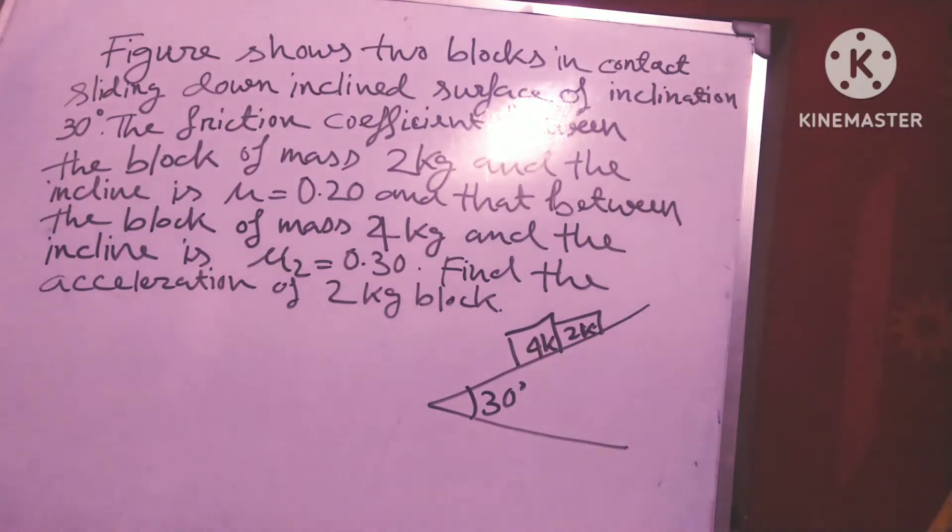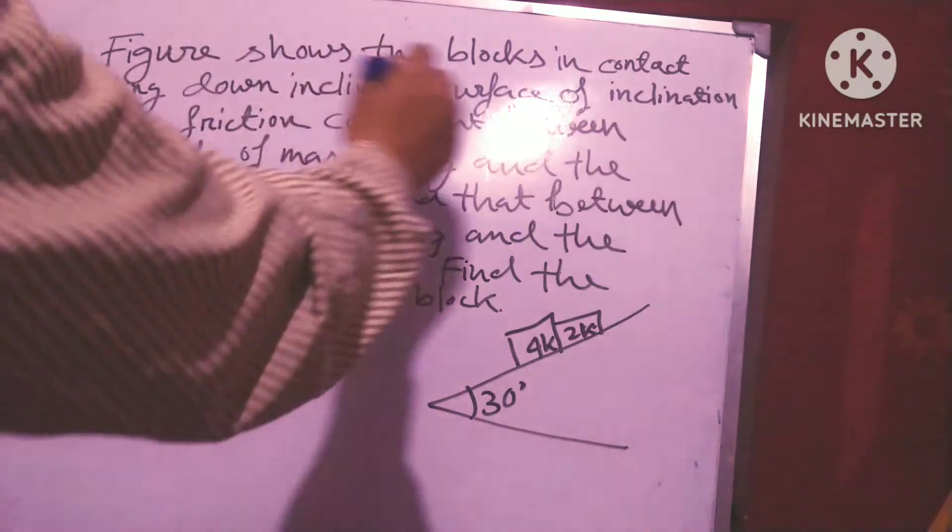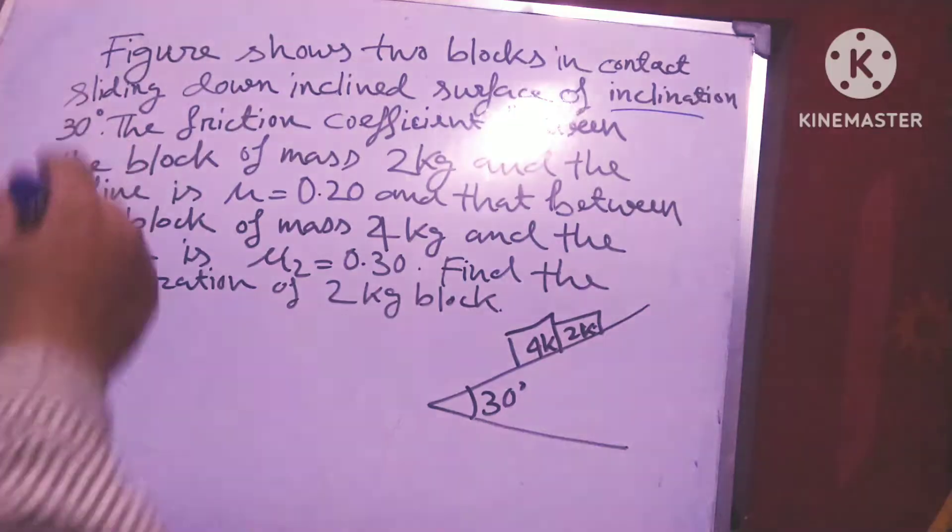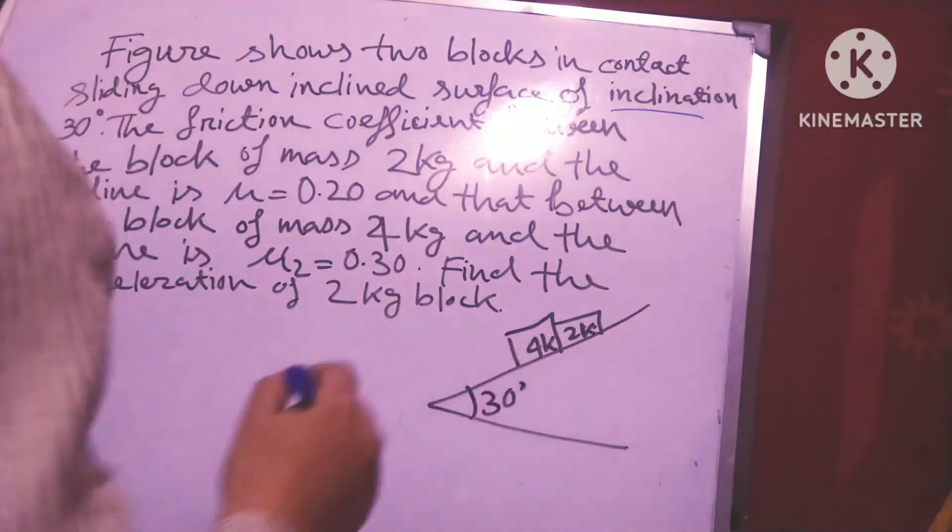Figure shows two blocks in contact sliding down an inclined surface of inclination 30 degrees.